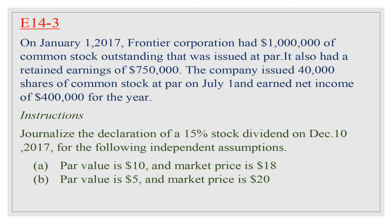F Corporation also had retained earnings of $750,000. The company issued 40,000 shares of common stock at par on July 1 and earned net income of $400,000 for the year. Instructions: Journalize the declaration of a 15% stock dividend on December 10, 2017, for two independent assumptions — (a) par value is $10 and market price is $18; (b) par value is $5 and market price is $20.